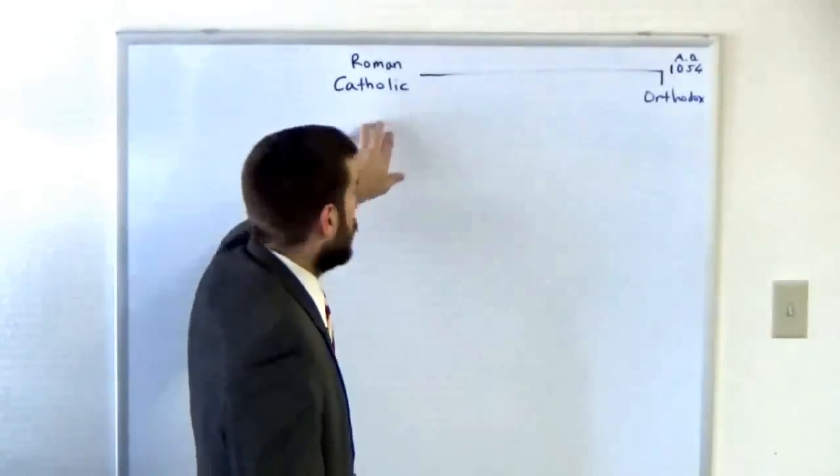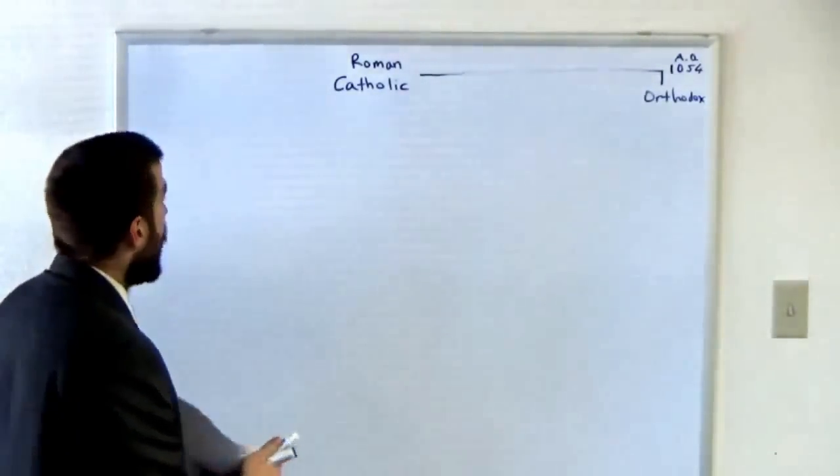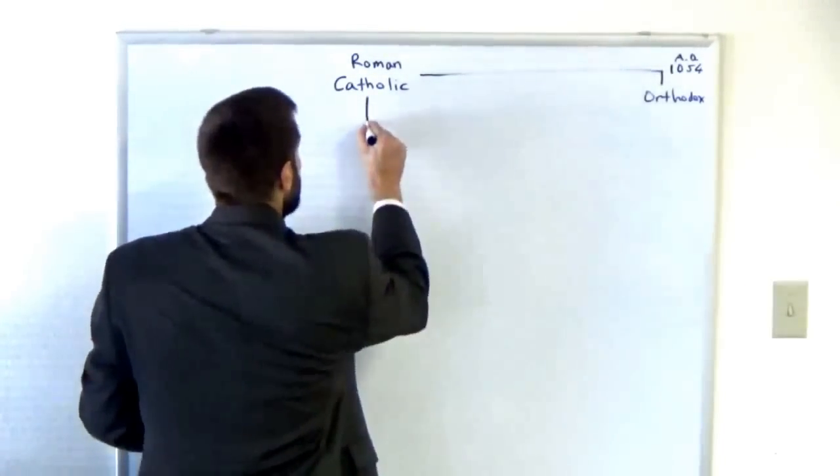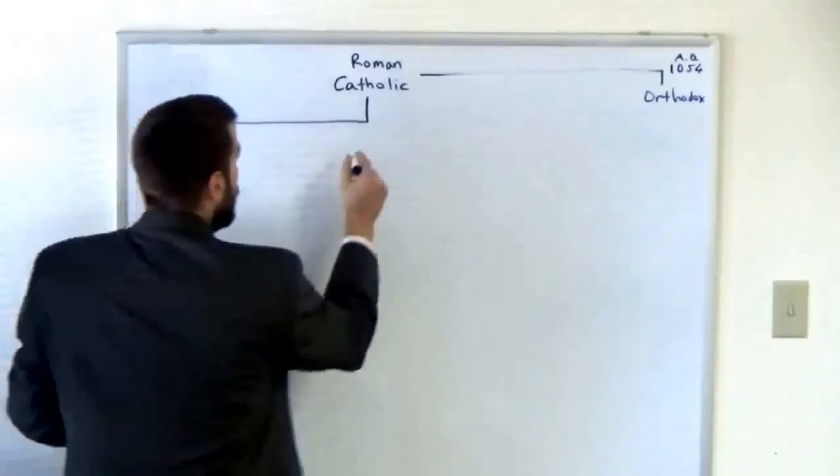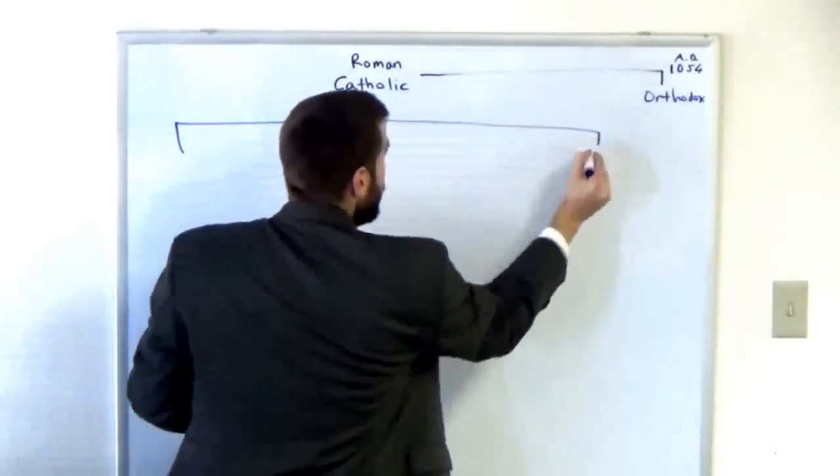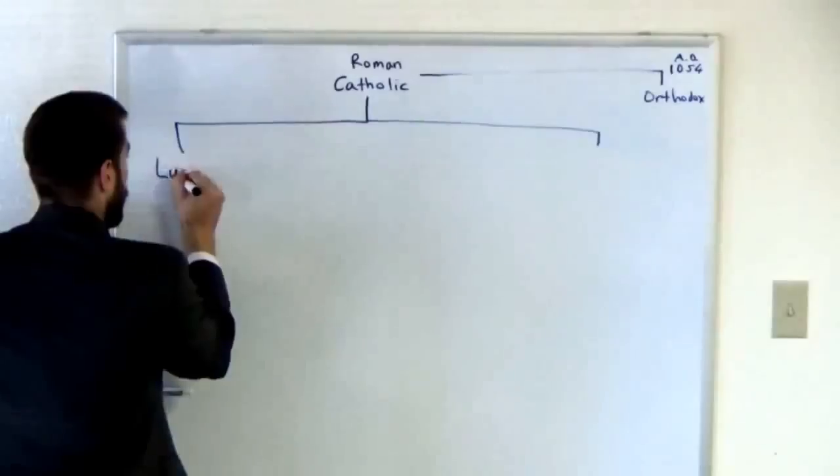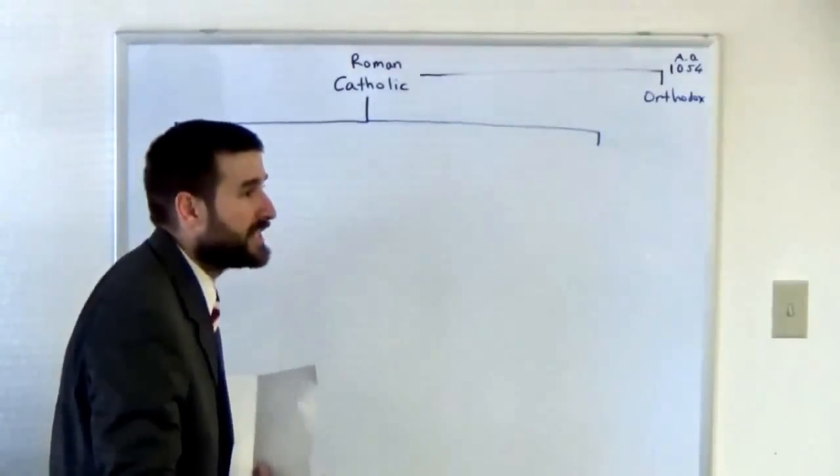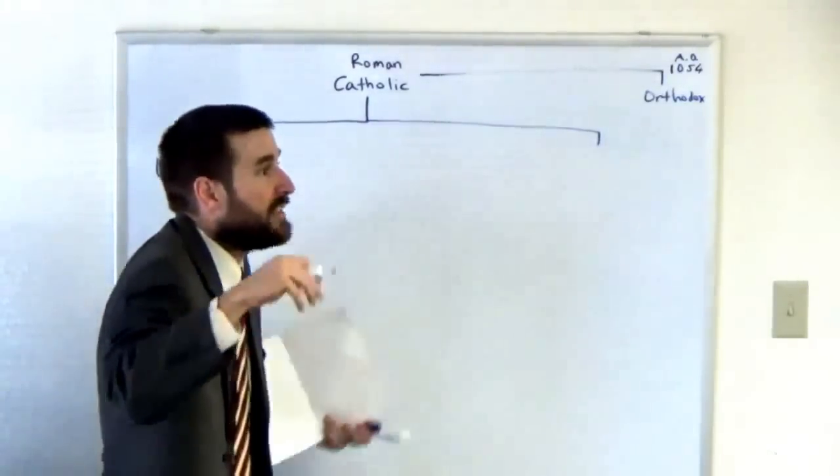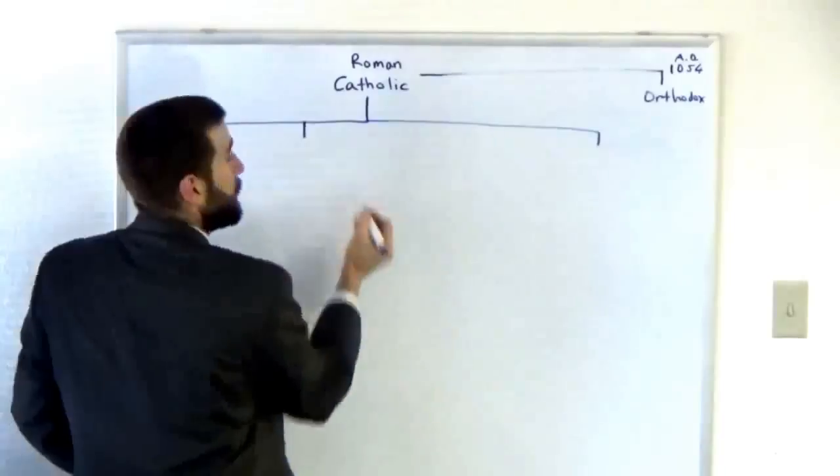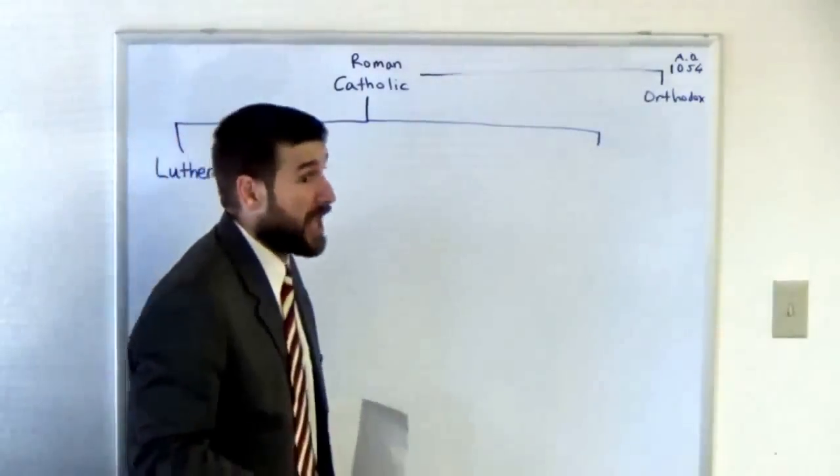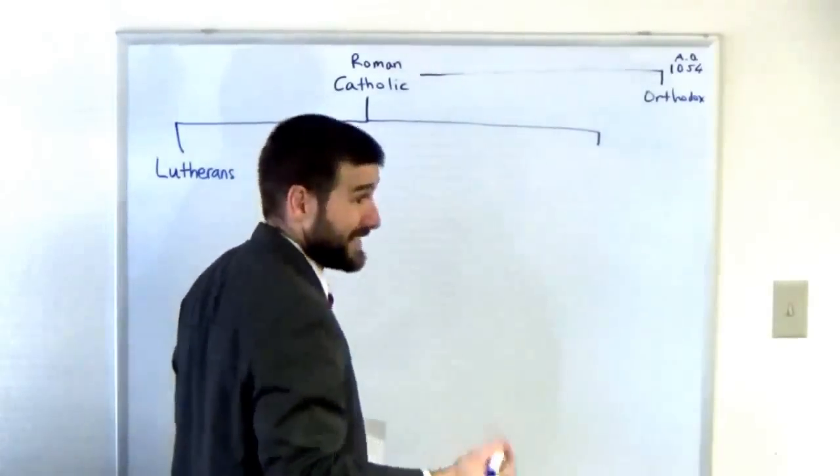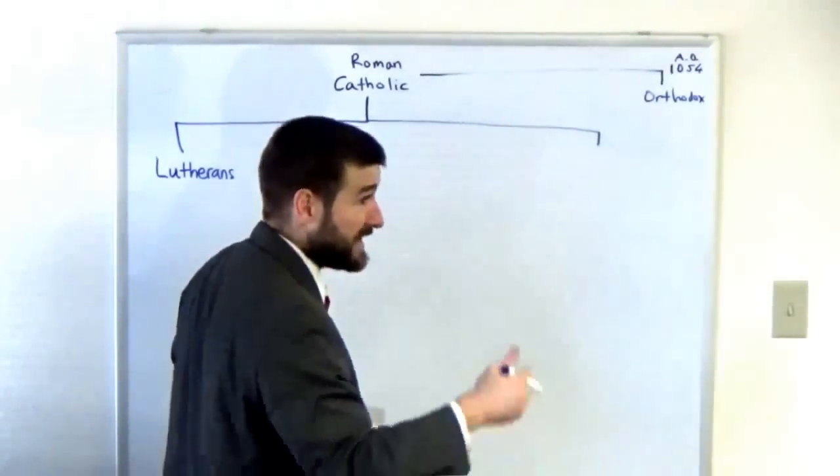In the 16th century, the 1500s, we have the Protestant Reformation. You have men like Martin Luther, which is where we get our Lutherans. Martin Luther was a Catholic priest that said I never left the Catholic Church, they left me. He didn't like some things about the Catholic Church but kept a lot of the bad things like infant baptism.